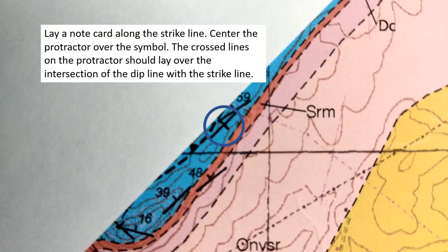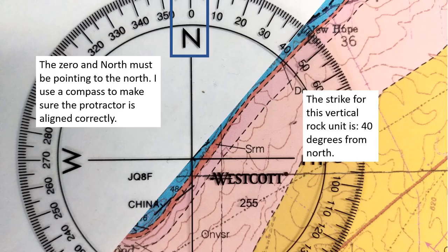Let's find the strike. To get started, lay a note card or piece of paper along the strike line. Place the edge directly on the long strike line. Then center the protractor over the symbol. The crossed lines on the protractor should lay over the intersection of the dip line with the strike line. When the protractor is placed over the symbol, the 0 north on the protractor must squarely face the top of the map.